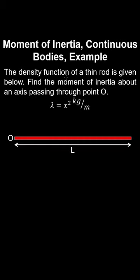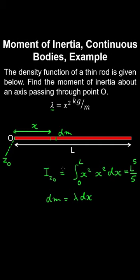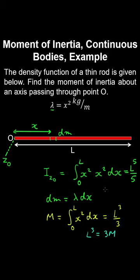Let's find the moment of inertia of a thin rod with non-uniform density about an axis through point O. Using the definition of moment of inertia in terms of variable x (distance to mass element dm), we write dm using the linear density times dx. Substituting for dm and the density function lambda, integrating from 0 to L gives the moment of inertia. Writing the result in terms of mass by integrating the density function from 0 to L and substituting L³ in terms of mass gives (3/5)mL².